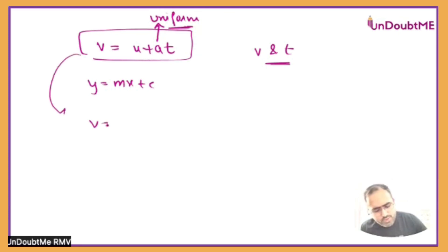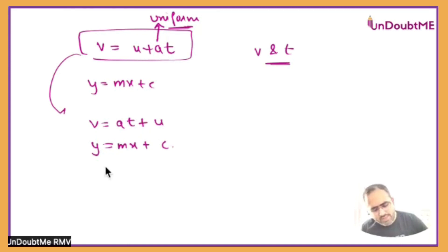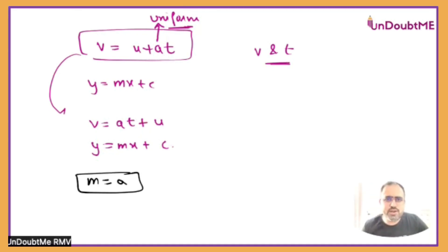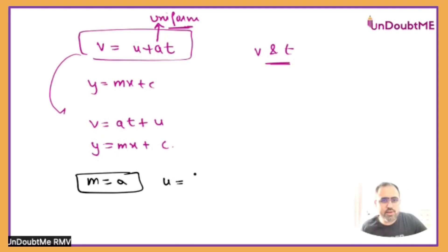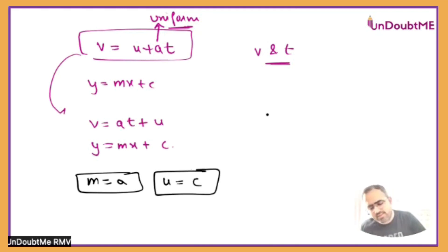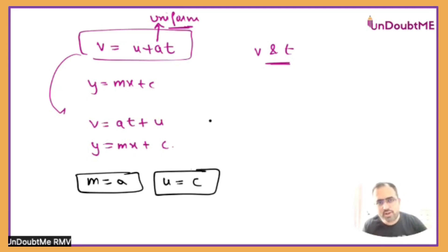I rewrite V is equal to U plus aT as V is equal to aT plus U. If I compare that with Y is equal to MX plus C, we can see that the value of M will be equal to acceleration. If it is motion under gravity, they can ask what is the gradient, what is the acceleration from the graph. They can even ask for initial velocity — that will be the Y-intercept. So if you're clear with this, they can ask what is the initial velocity for a shown graph. You just find the intercept if it is a velocity-time graph.